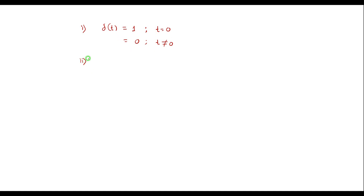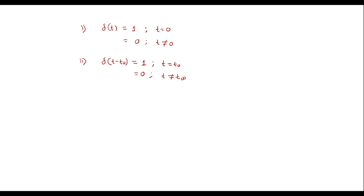Another property of the delta function is δ(t − t₀), the shifted version of δ(t) shifted by t₀. Its value is equal to 1 when t is equal to t₀, and its value is 0 when t is not equal to t₀.